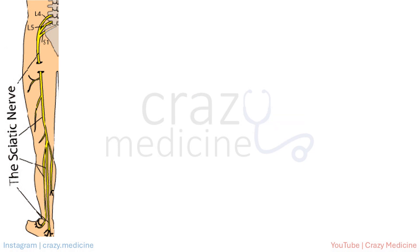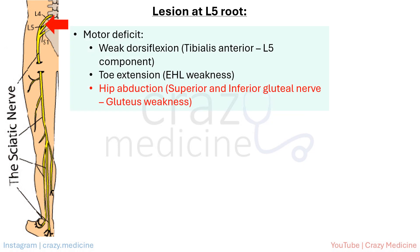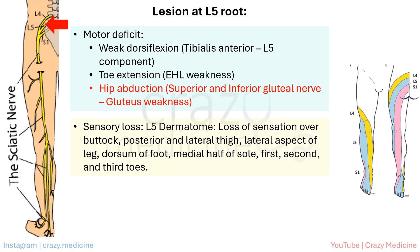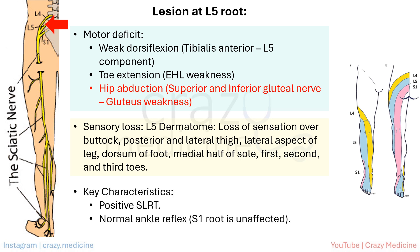First, let's look at the L5 root. Motor deficits may include weakness of dorsiflexion due to involvement of tibialis anterior muscle, toe extension weakness due to EHL involvement, and hip abduction weakness due to gluteal muscle involvement, which is innervated by the superior and inferior gluteal nerves. Sensory deficits involve loss in the L5 dermatome as shown in the figure. Additional features of root lesions include a positive straight leg raise test and a normal ankle jerk, as the S1 nerve root is spared.